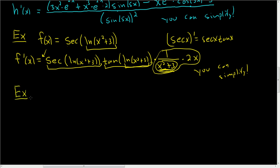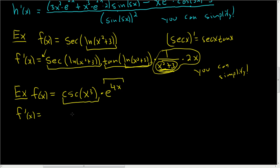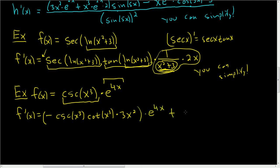Let's do one more. f of x equals cosecant x cubed times e to the 4x. So f prime of x — this is a product rule, this is the first, this is the second. The derivative of cosecant is negative cosecant cotangent. So this is negative cosecant x cubed cotangent x cubed times the derivative of the inside, 3x squared. That's the derivative of the first piece times the second, plus the first times the derivative of e to the 4x — that's e to the 4x times 4 by chain rule.